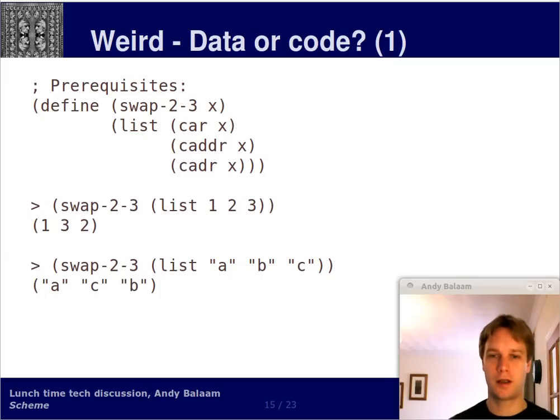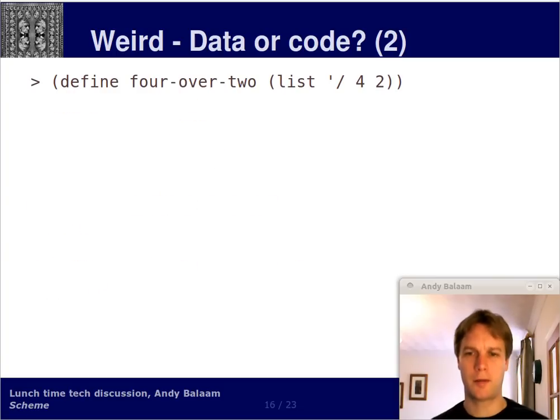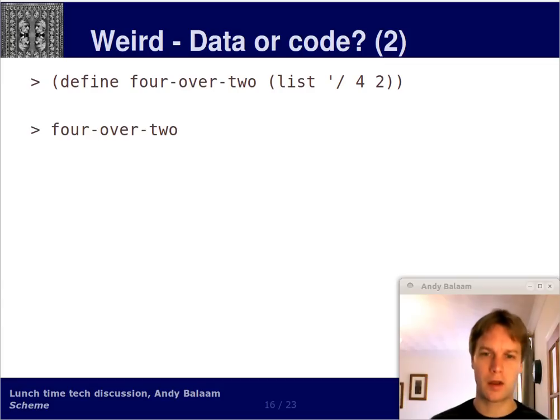Okay, other things. So how do we know what's data and what's code? Well, actually, they can swap around. So imagine we've got a function called swap-2-3. Don't worry about the details of it, but look at that example in the middle of the page there. If I pass in one, two, three to that function, it returns one, three, two. It swaps the second and third things in a list. So if I pass ABC to it, it returns ACB. Make sense? So imagine now I'm defining a symbol called four-over-two, which is a list. So this is not going to divide anything. That slash symbol there means divide. It's not going to divide anything, it's just a list of symbols. The slash symbol, the four symbol, and the two symbol. Don't worry about the quote, we will get to that, although it will take us quite a while. So what is four-over-two? It is slash four, two.